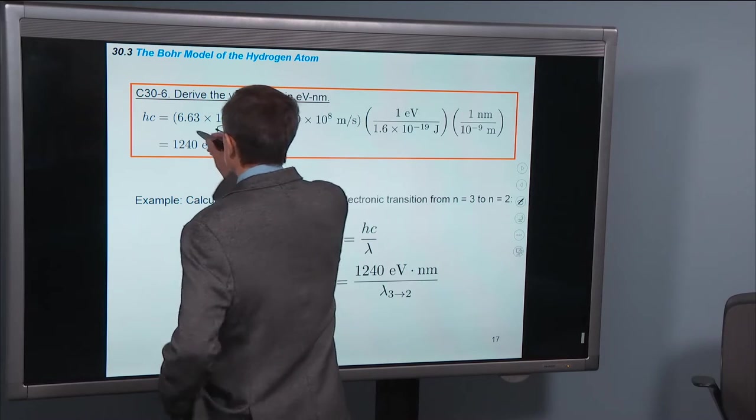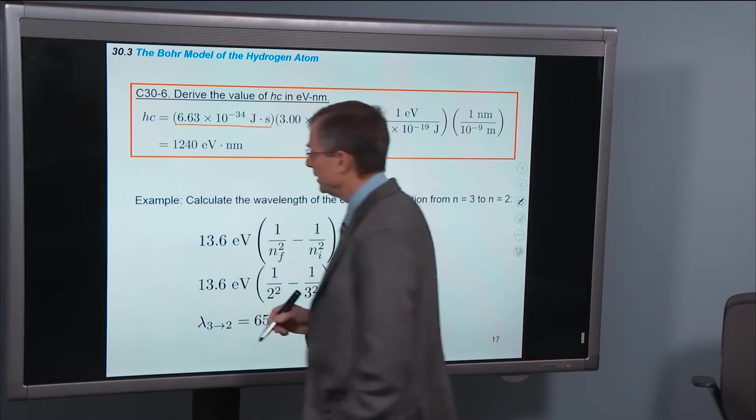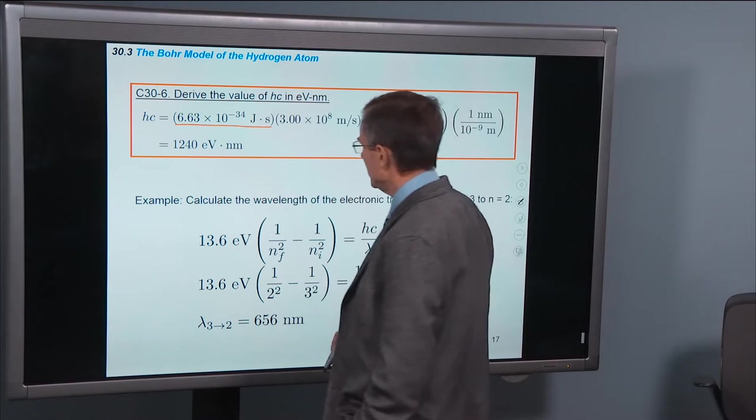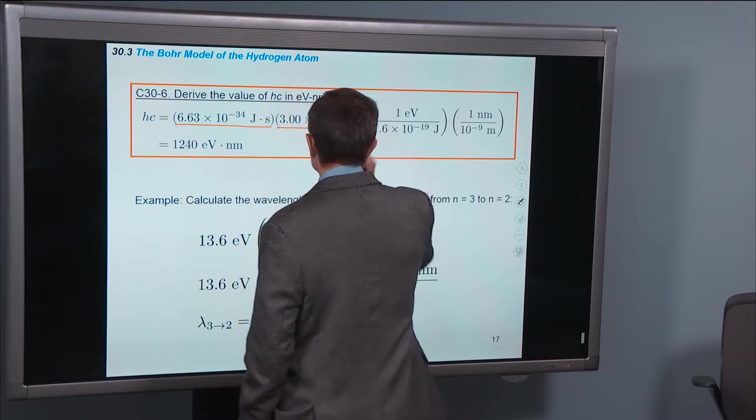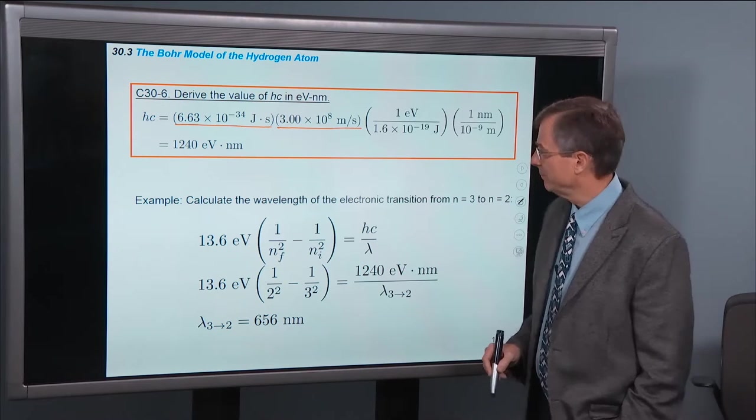hc, well what's h? It's Planck's constant, you already know it, 6.63 times 10 to the minus 34 joules seconds. hc, you know that, it's 3 times 10 to the eighth meters per second.